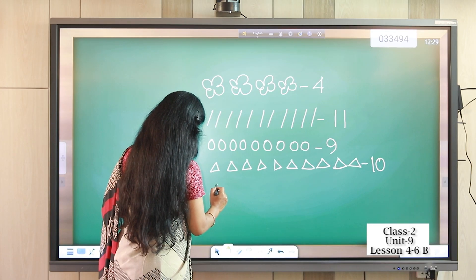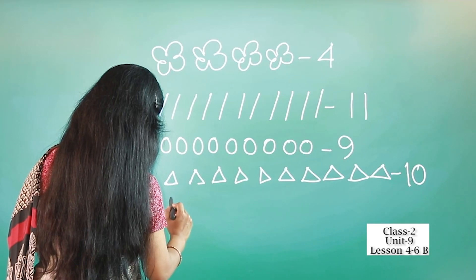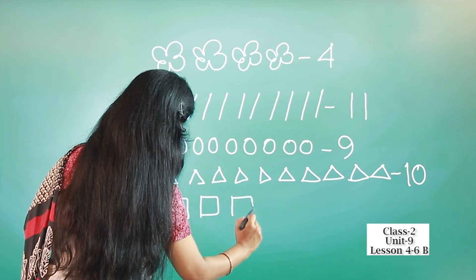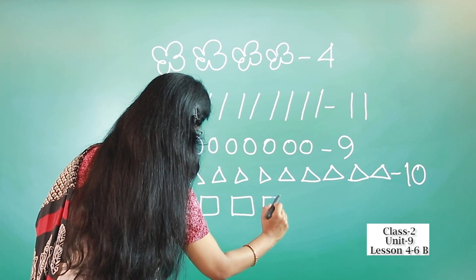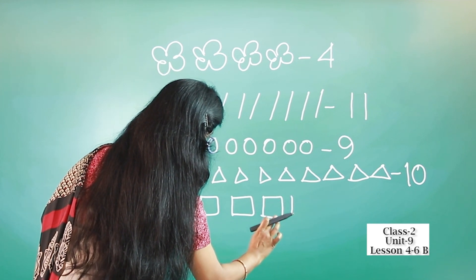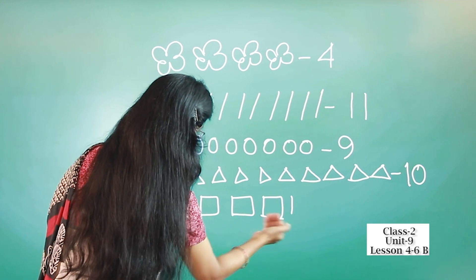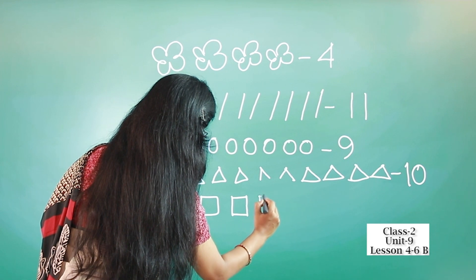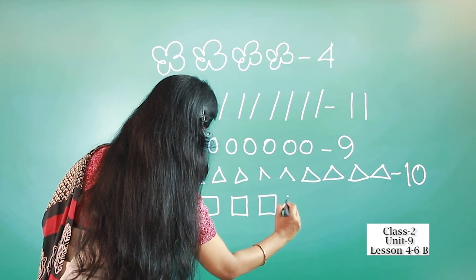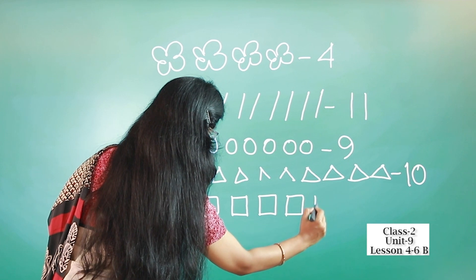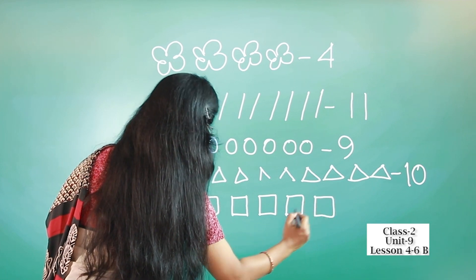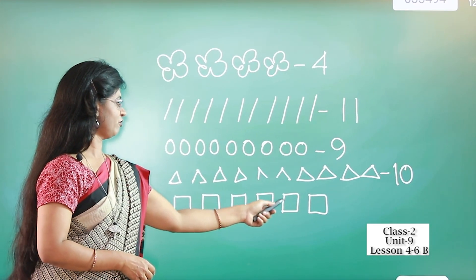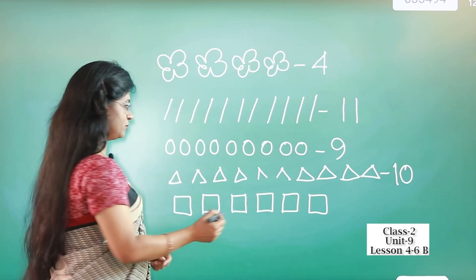Now I'm going to draw some squares. How many squares are there? One, two, three, four, five, six — six squares. You have to write 6 in your notebook.